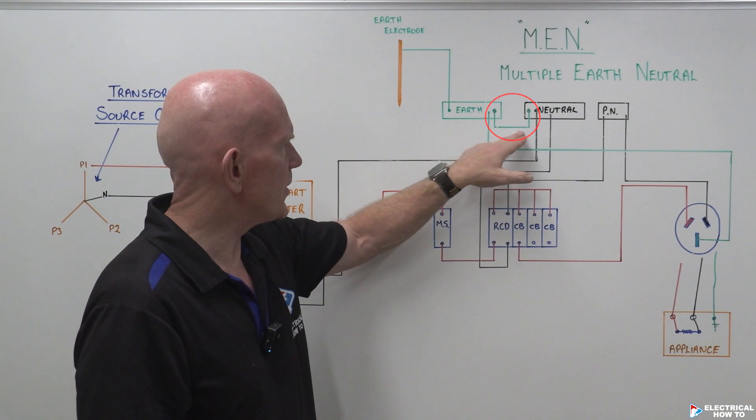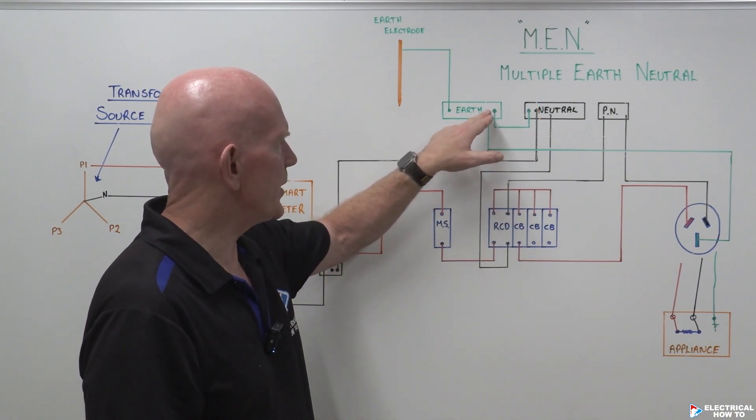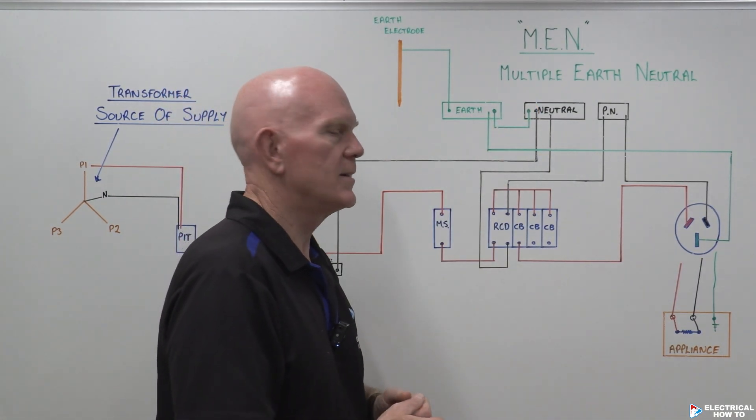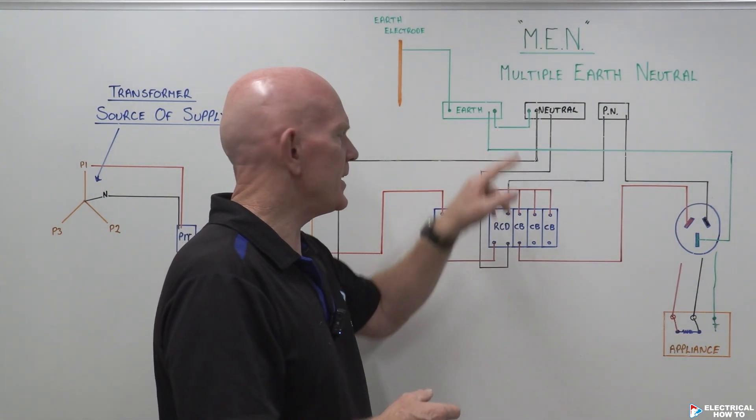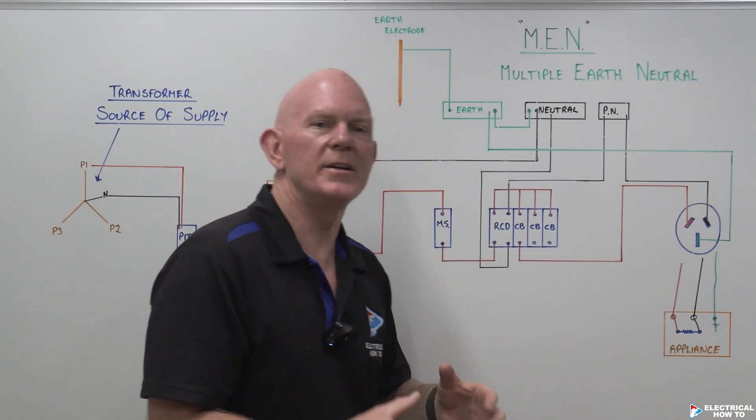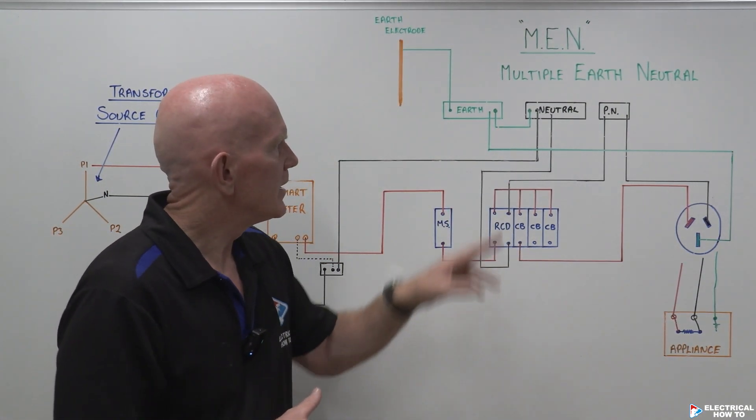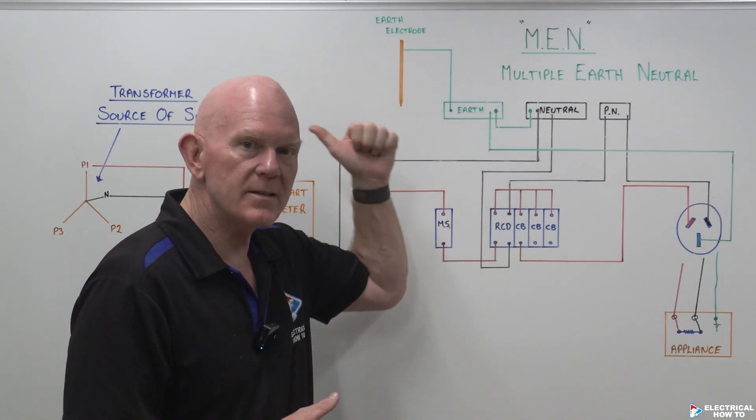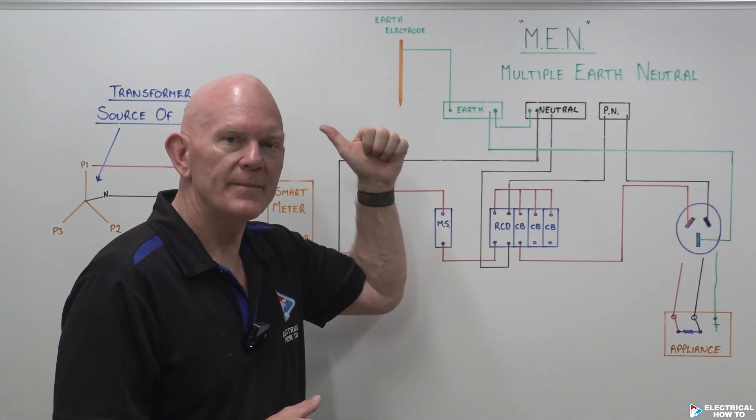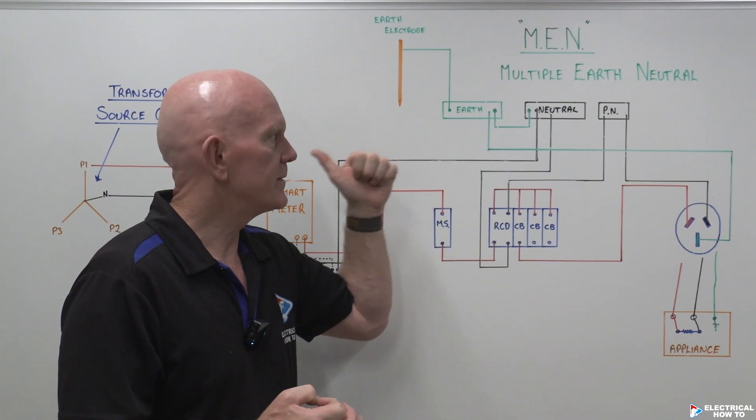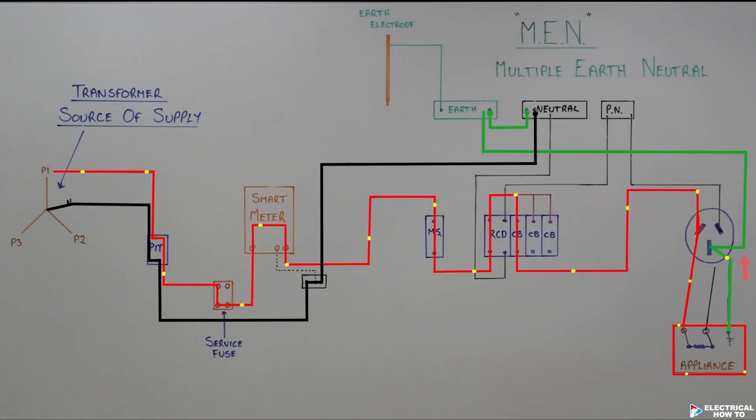The way it will go is via this cable that's linked between our earth bar and our neutral bar. And that's our MEN connection, also known as our MEN link. We've already got a connection from our neutral bar back to the source of supply. So that's the path it's going to take. So let's follow it along now. So now our fault current is going to jump onto the neutral after it's gone via the MEN, and it's going to continue along the neutral.